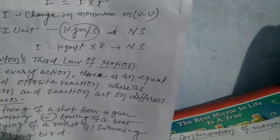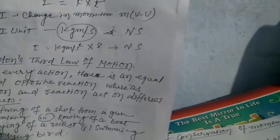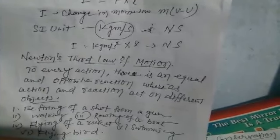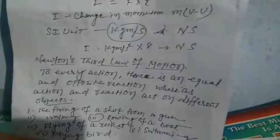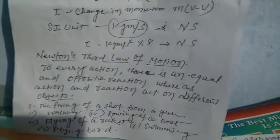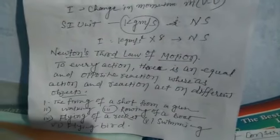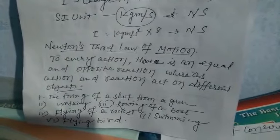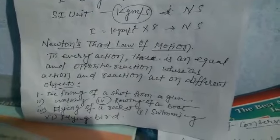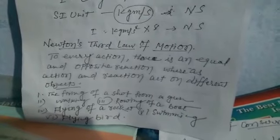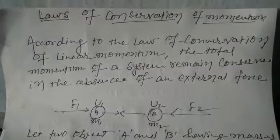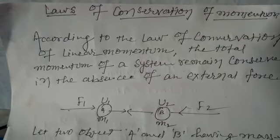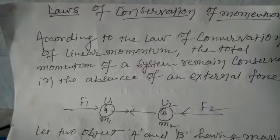Example: walking. When you walk on the ground, your foot pushes the ground backwards. As per Newton's third law, the ground pushes your foot forward with equal force. This law is defined as the conservation of momentum, where action and reaction are equal and opposite.